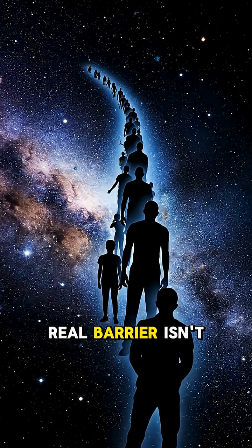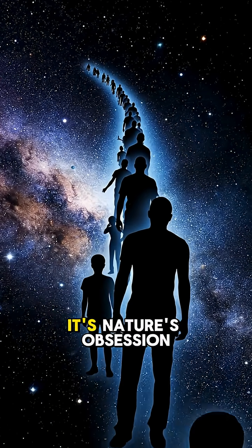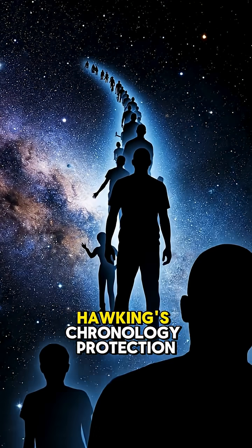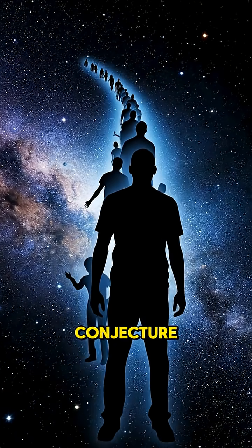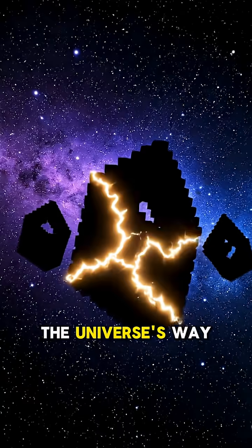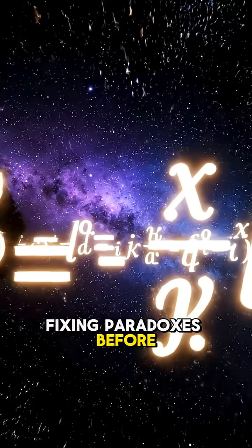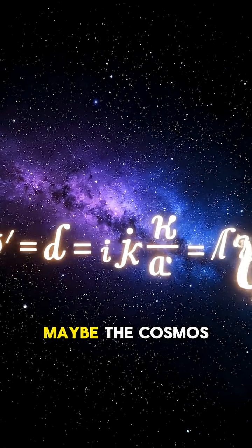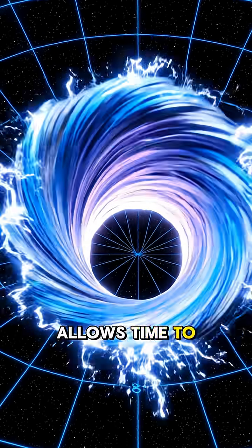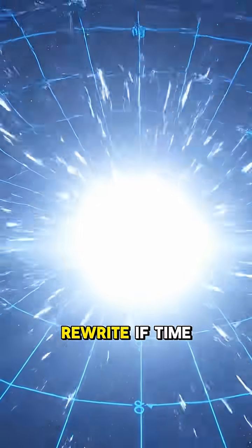For me, the real barrier isn't mathematics. It's nature's obsession with consistency. Hawking's chronology protection conjecture might be the universe's way of protecting its own timeline, fixing paradoxes before they even begin. Maybe the cosmos allows time to stretch, but not to rewrite.